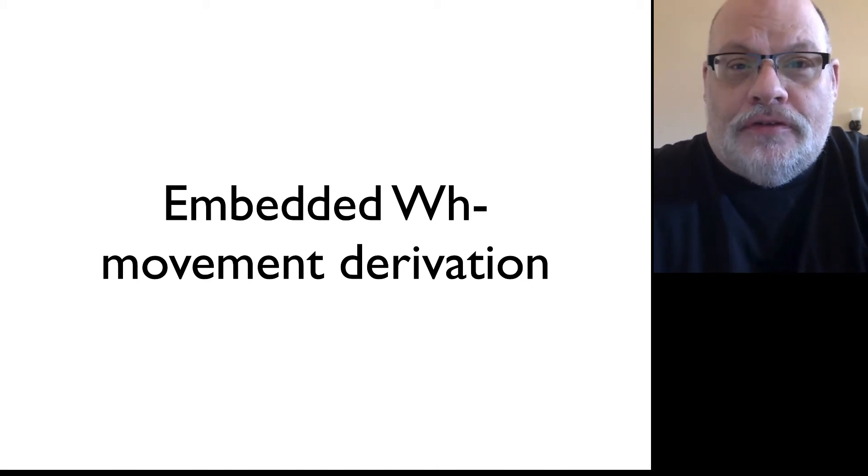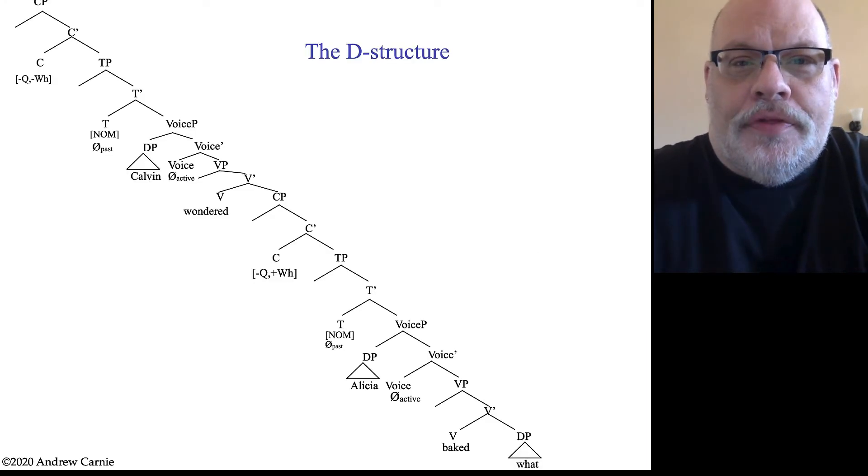We're going to do a derivation to run through this. So, let's start off with the sentence we're going to derive. It's going to be Calvin wondered what Alicia baked, is the surface form. But we're going to generate the D structure first, just as we have in previous videos where we do derivations.